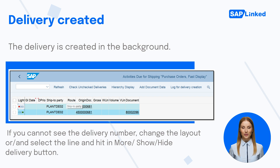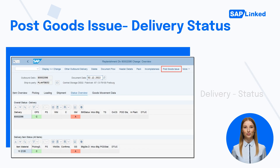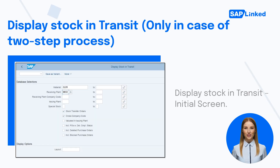Now you can proceed with the next step and perform Picking and Post Goods Issue. Go to Transaction Code VL02N, provide the Delivery Document Number and click Enter. Then insert the picking quantity. Now to check the status of your delivery, go to the Status Overview tab, and if the picking is completed, you can click on the Post Goods Issue button. Once the Post Goods Issue is completed, you can check the stock in transit for the receiving plant.